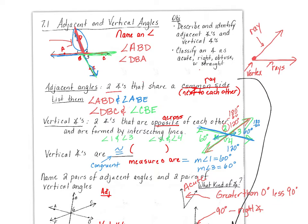It says name two pairs of adjacent angles and two pairs of vertical angles. For adjacent angles — sitting right next to each other — I'm going to say angle B, G, C and angle C, G, D. Notice how they both have G and C in common, meaning they share that side. Let's also use angle F, G, E and angle F, G, A. Those are adjacent — they sit right next to each other.